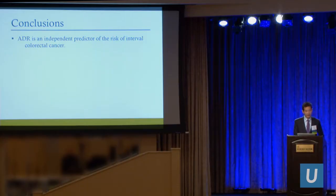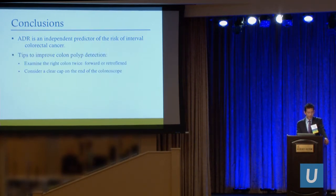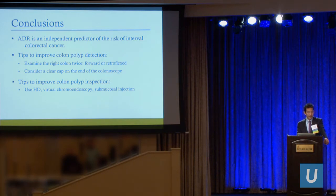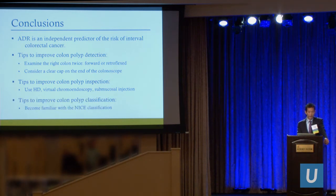In conclusion: ADR is an independent predictor of the risk of interval colorectal cancer — that's why it matters. Tips to improve detection: examine the right colon twice in forward view or retroflexion — equivalent in studies — or consider using a clear cap on the colonoscope. For inspection: use high-definition white light, virtual chromoendoscopy, and submucosal injection when needed. For classification: become familiar with the NICE classification — it's simple and easy to use in clinical practice. Thank you.